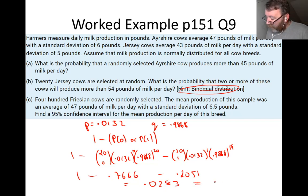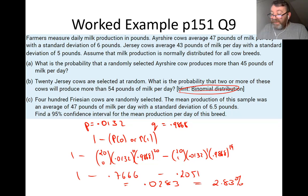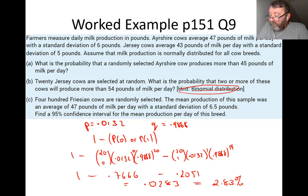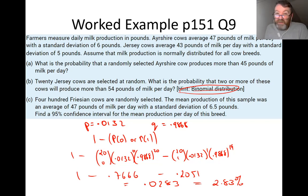That's a 2.83% probability that 2 or more Jersey cows will produce over 54 pounds of milk per day — which makes perfect sense. The average production is 43 pounds, so getting 54 pounds is quite rare, and 2.83% is a logical answer.